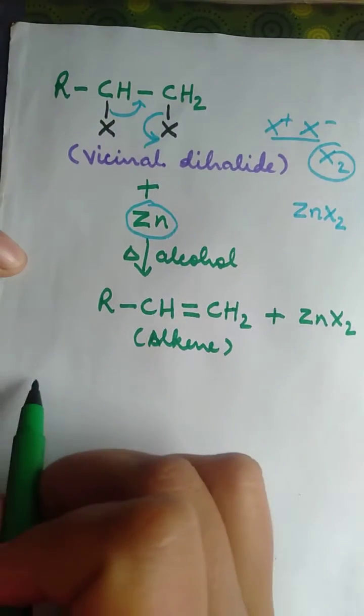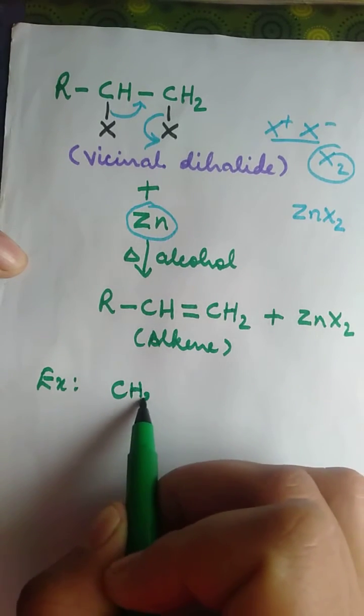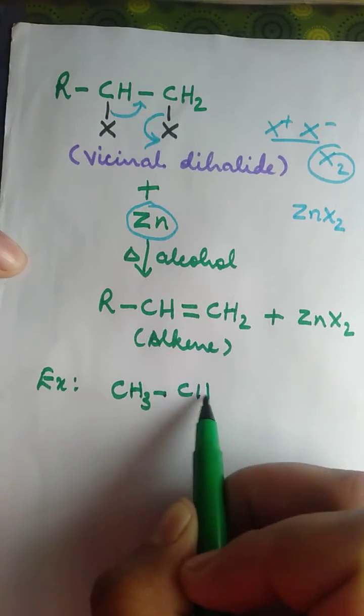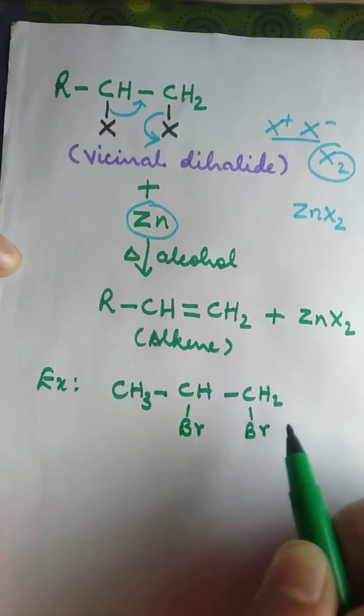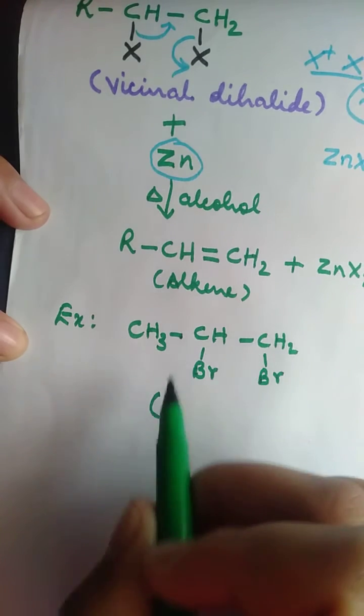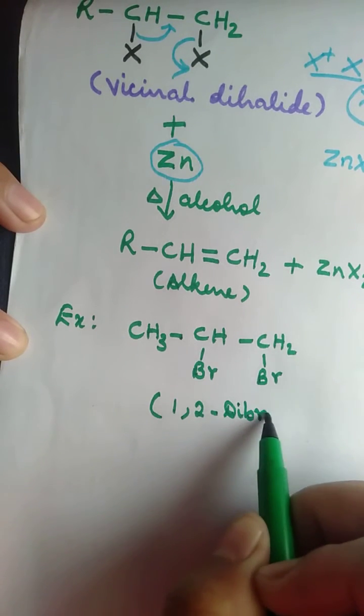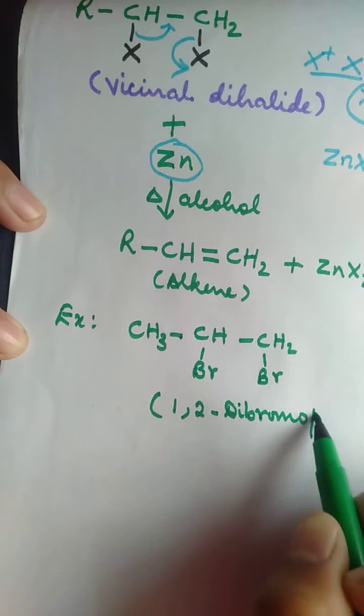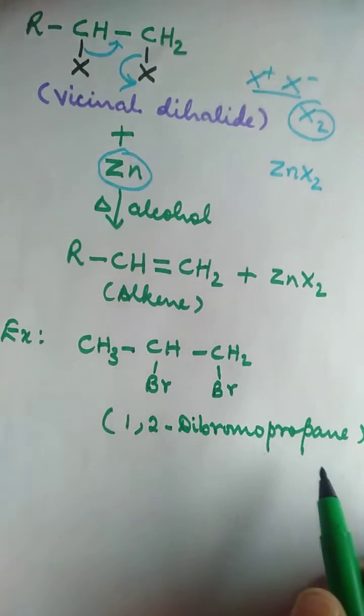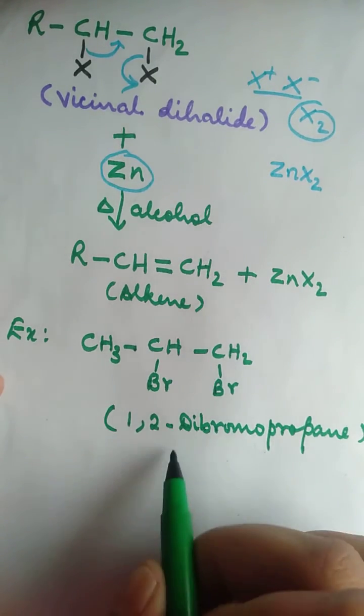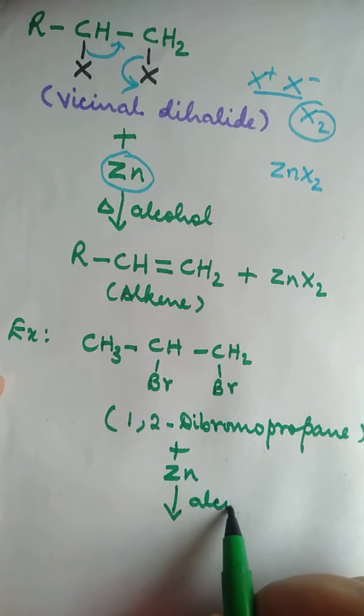For example, let's say we have CH3-CH-Br-CH2-Br. What is this? 1,2-dibromopropane. This one is treated with zinc dust in alcohol medium.